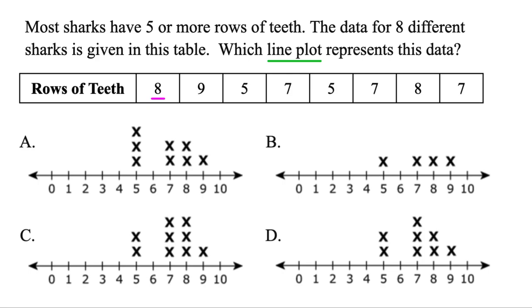Let's start with eight. And two sharks have eight rows of teeth. So let's find eight. And we want two X's. Once again, A has that. And D, that also has that. But that's all. So let's keep going.